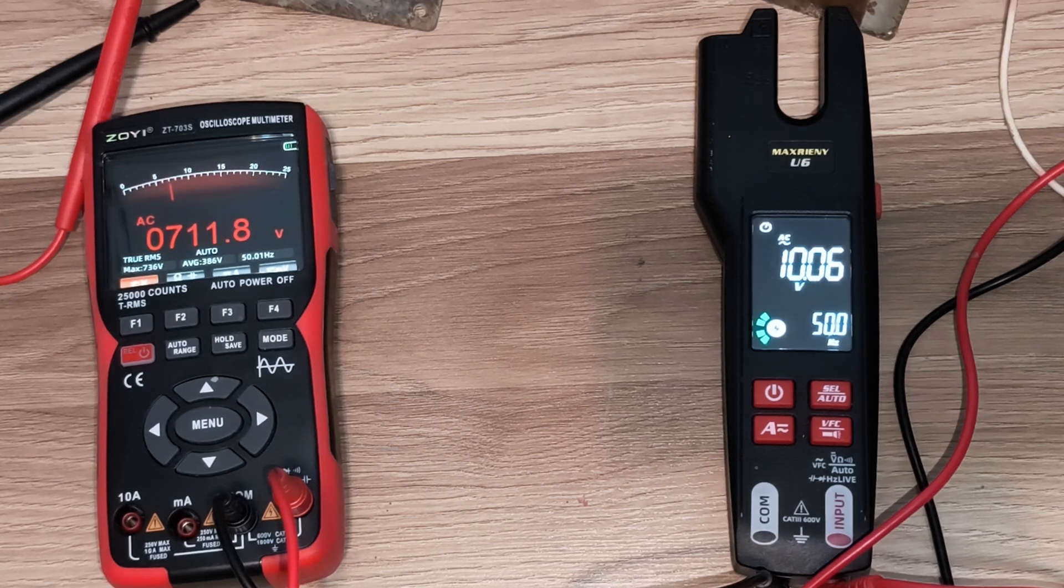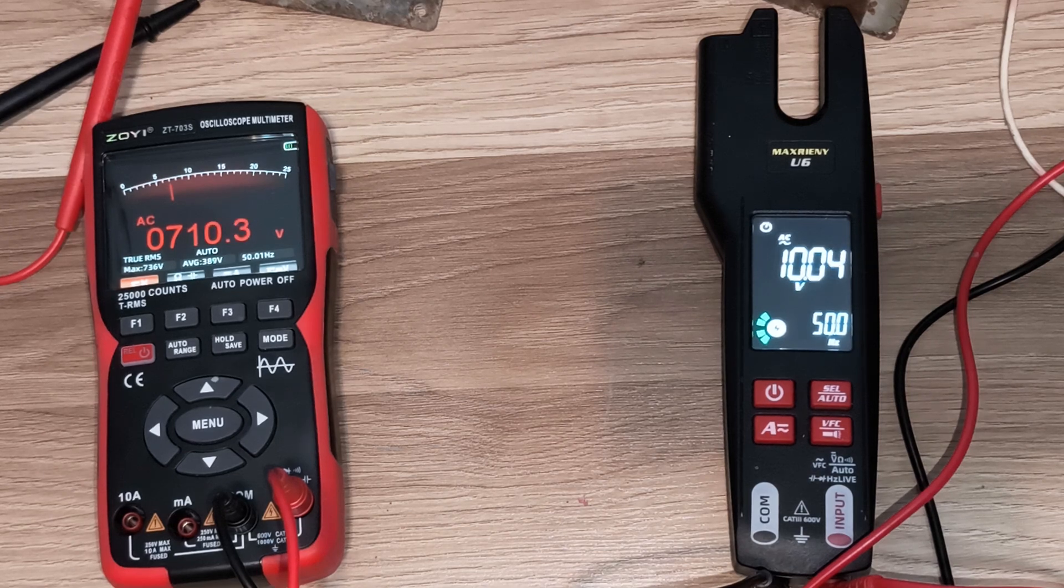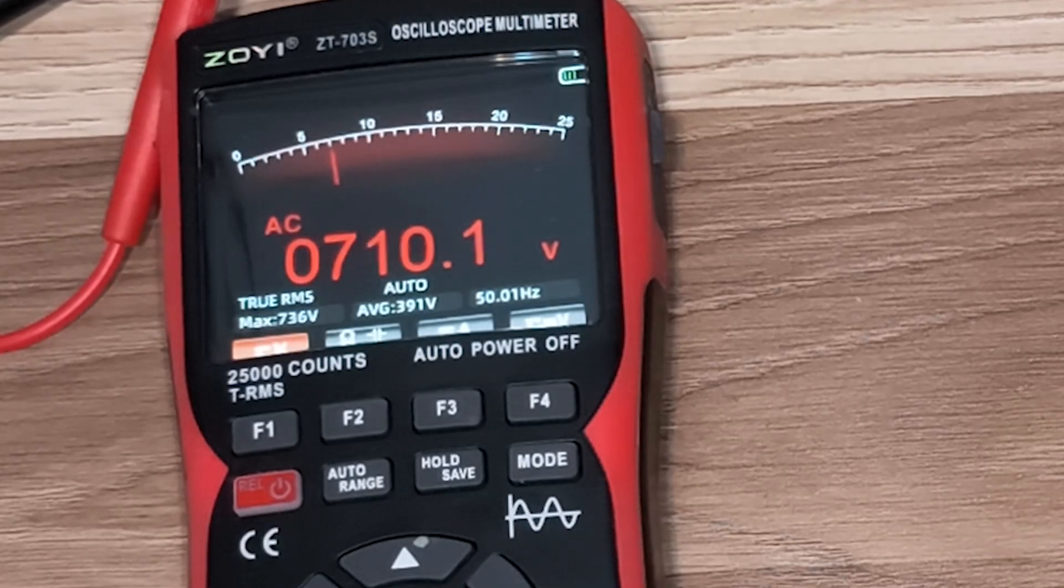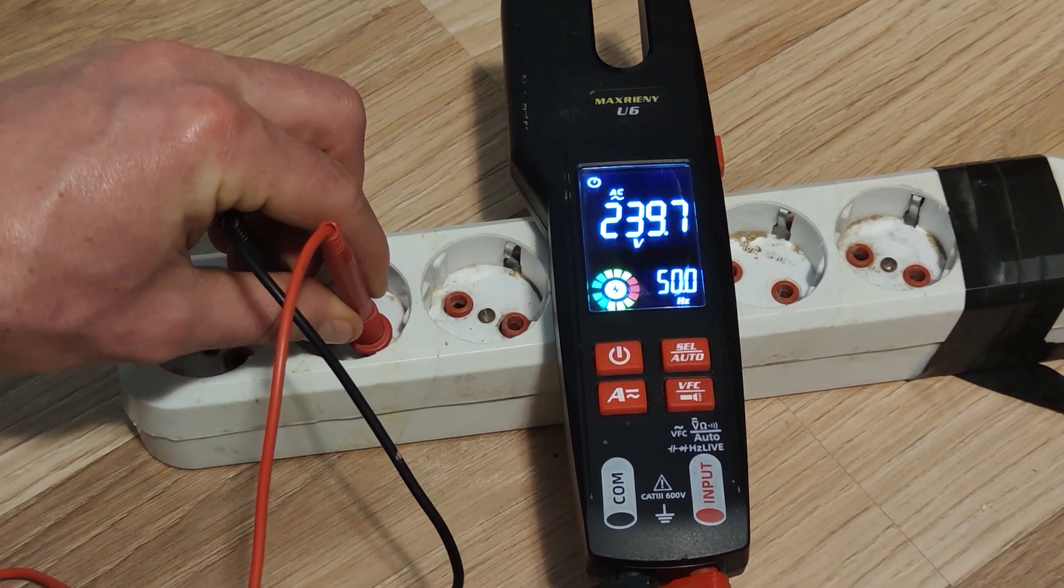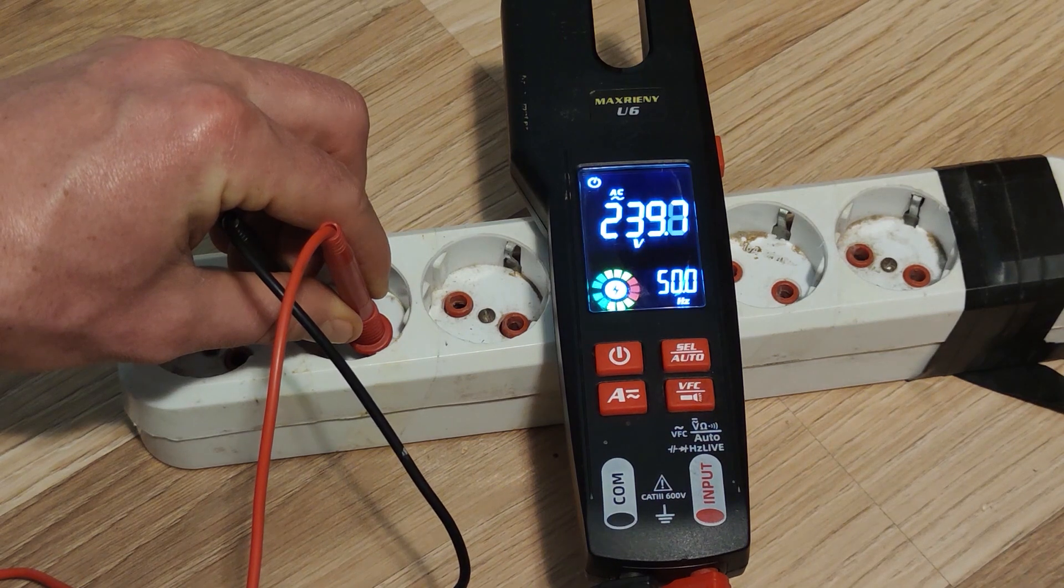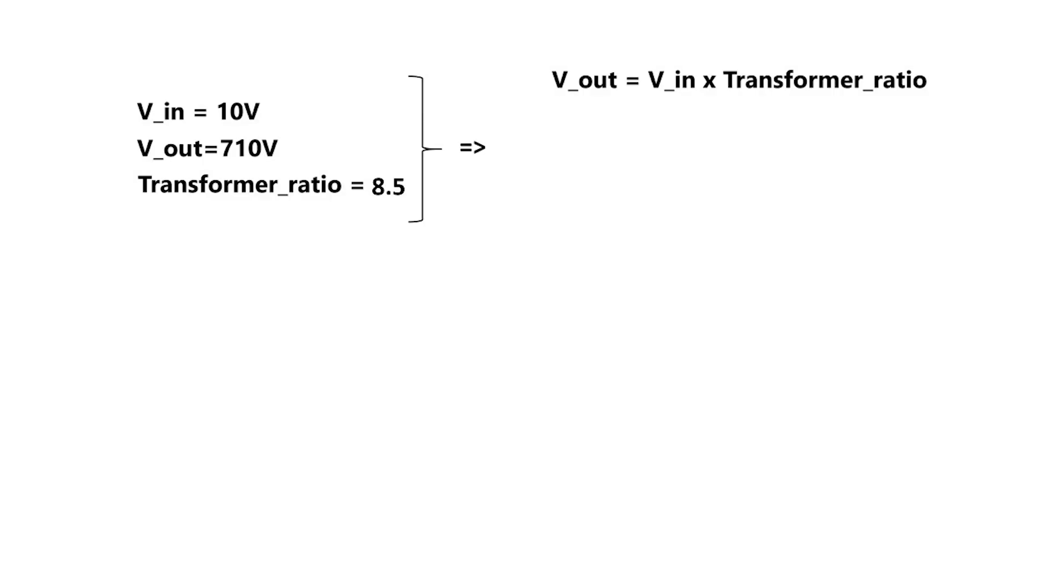I am feeding 10 volts into the primary of the first transformer, and I am measuring an output of 710 volts. This means each transformer has a turns ratio of 8.5. And if we multiply this ratio by the input, which in my case is 240 volts, we can calculate the final output voltage of 17,000 volts.